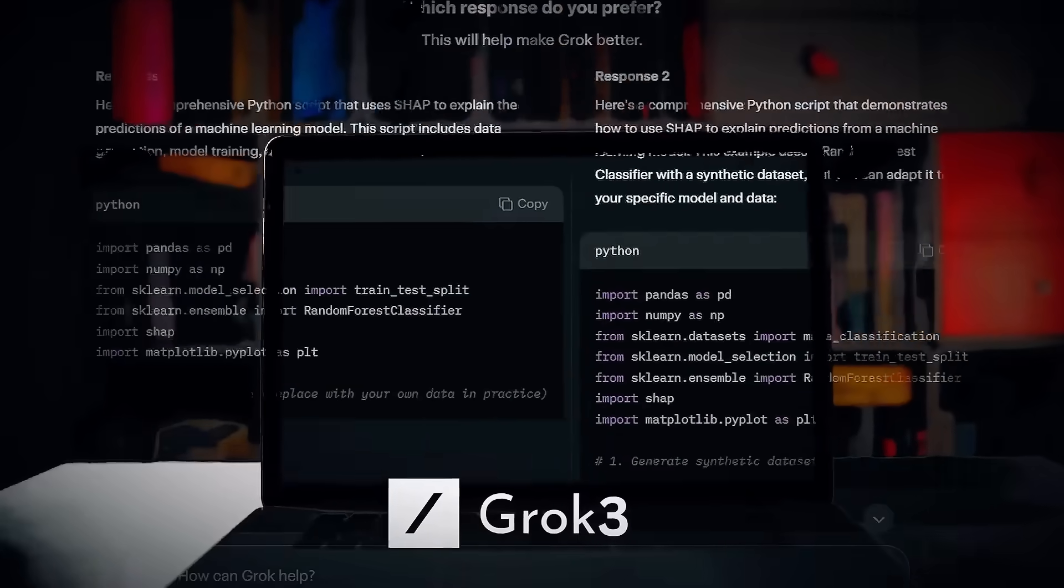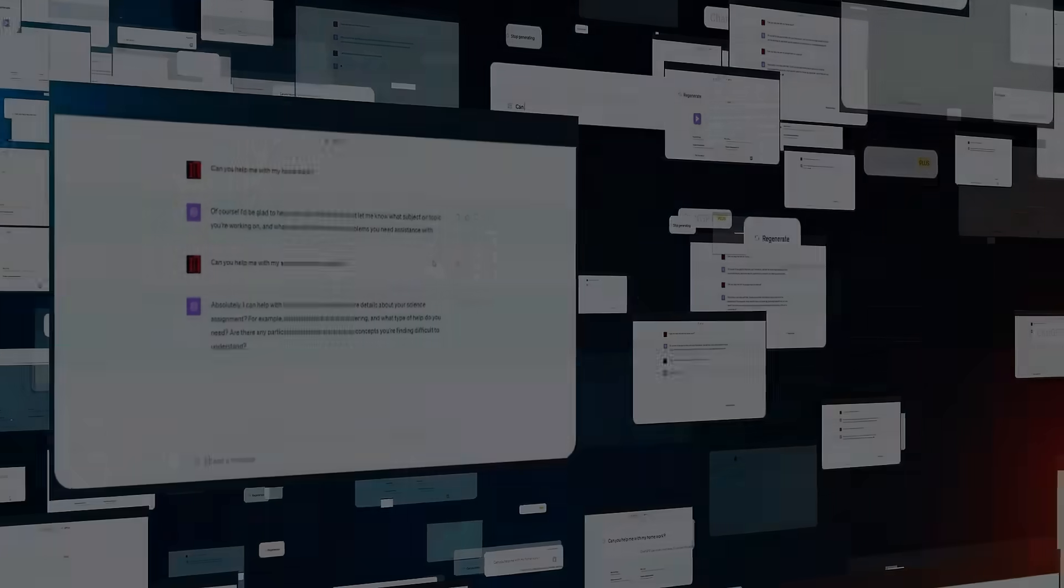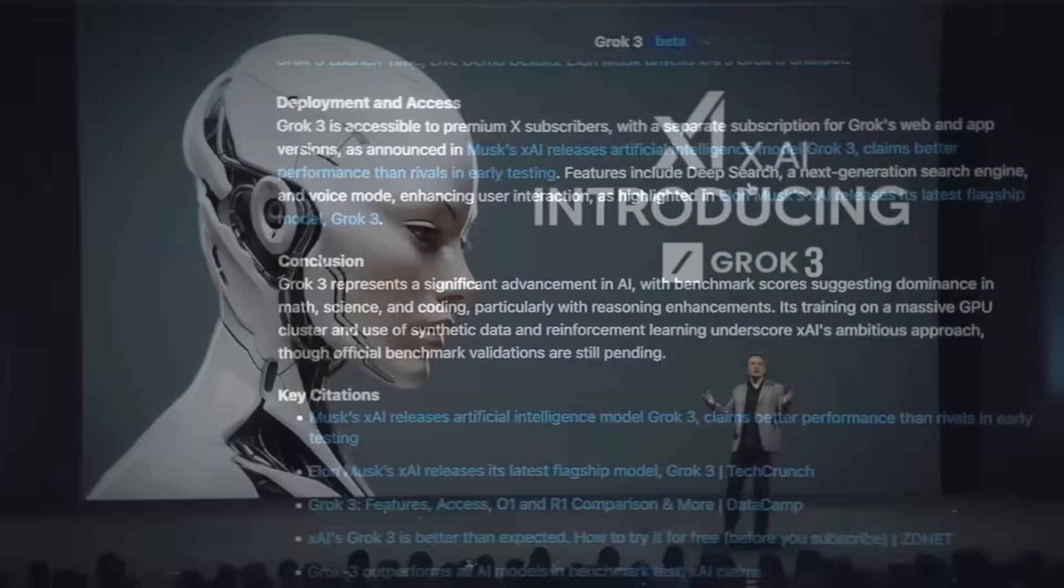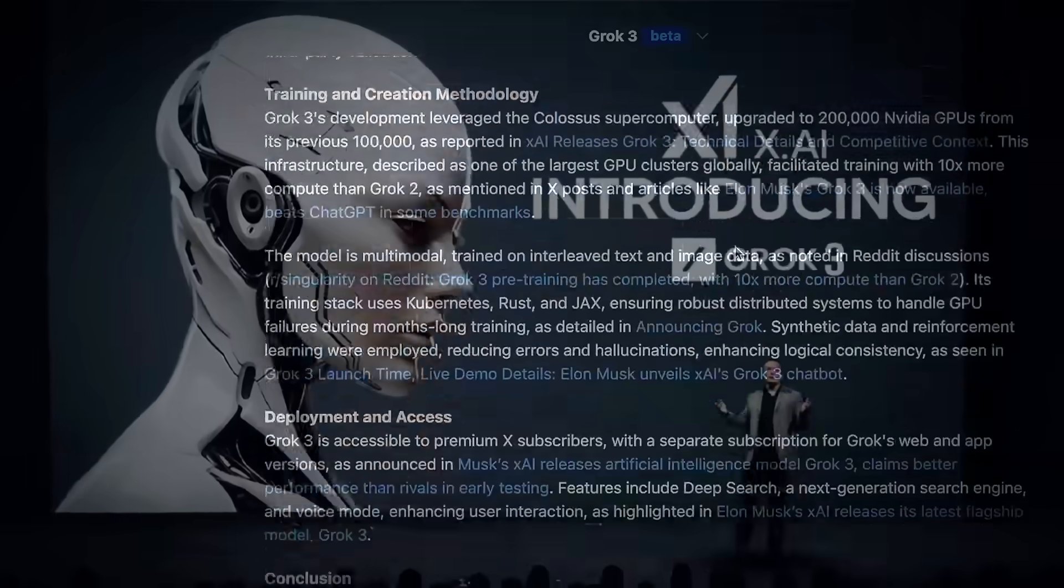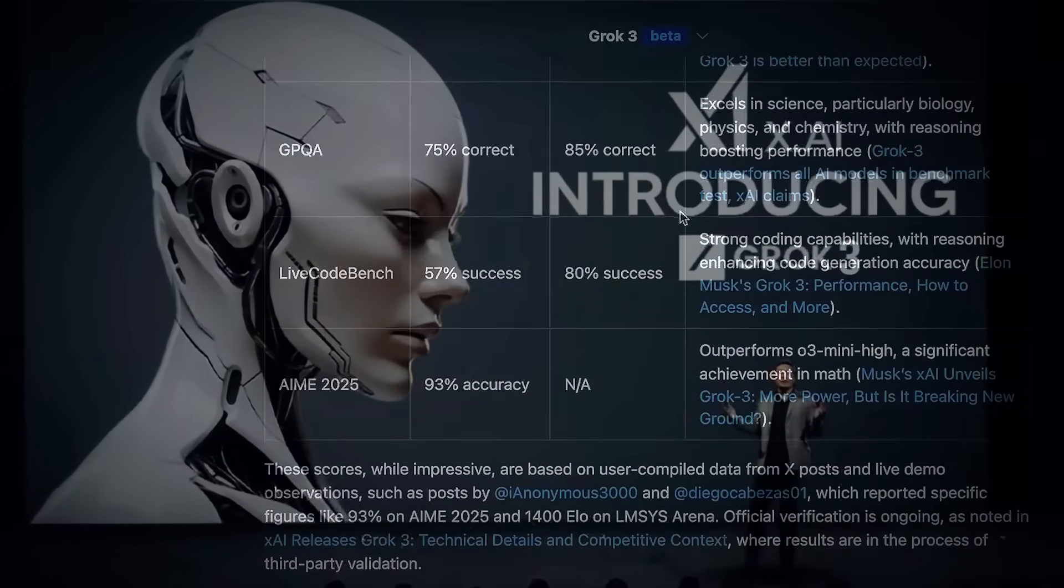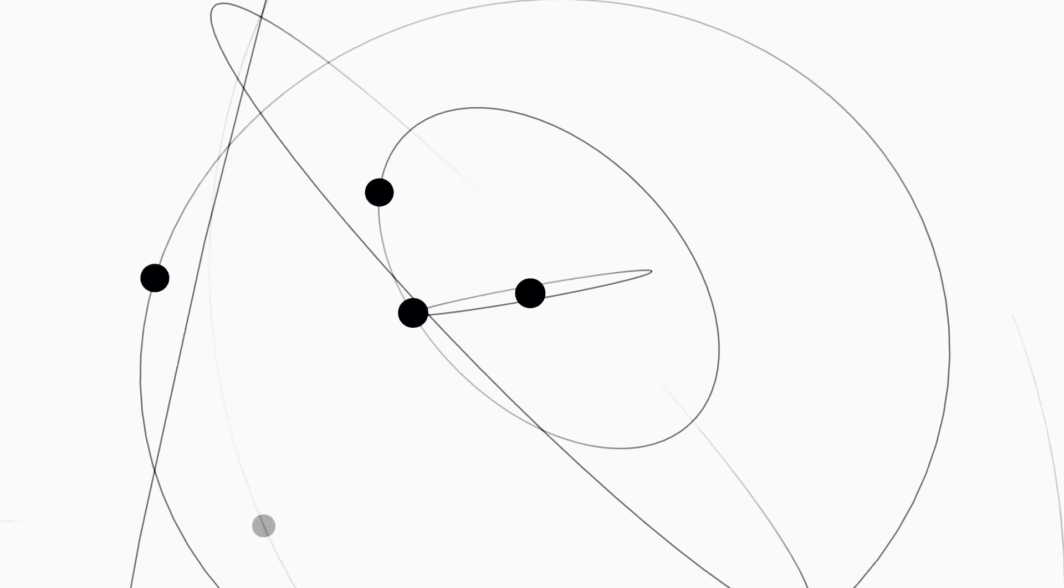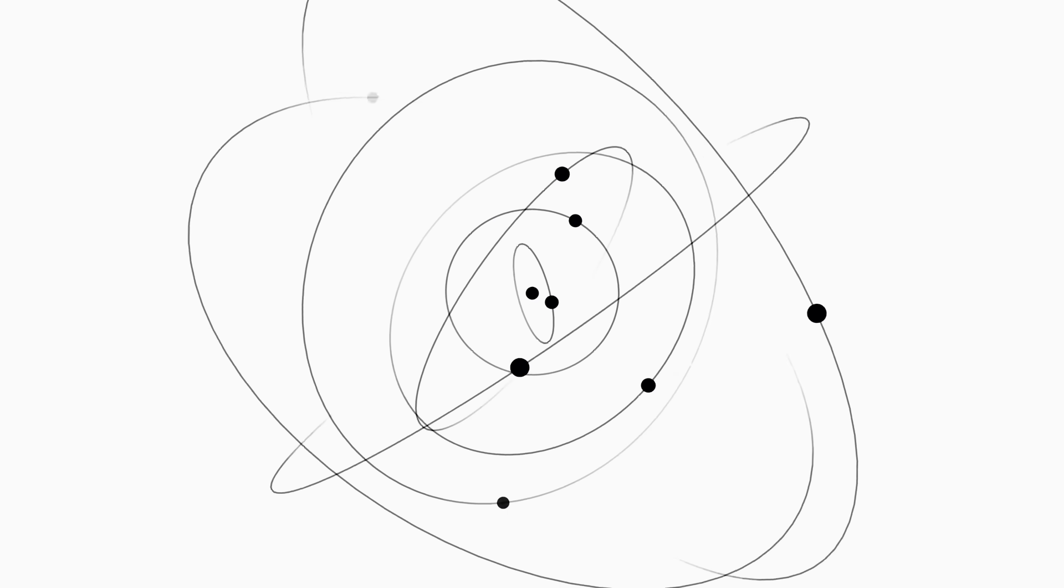Grok 3 didn't just analyze data, it uncovered a pattern no human ever expected to see. Something extraordinary happened when researchers connected Elon Musk's cutting-edge AI to Microsoft's revolutionary quantum processor.